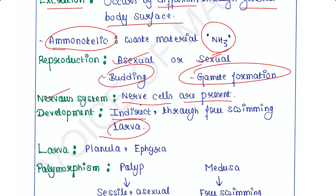The larvae are free-swimming — they can swim freely. The names of the larvae are planula, ephyra, etc.